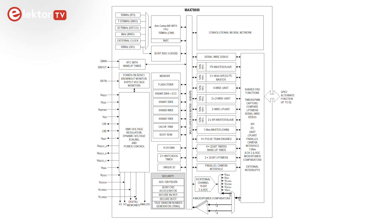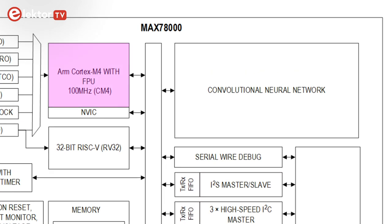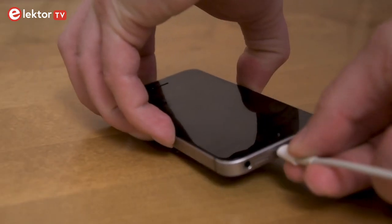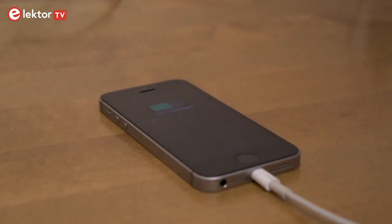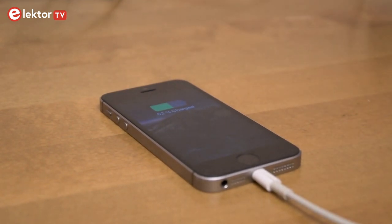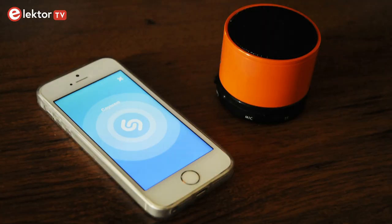An AI application running at the edge does all the hard work by itself. To do so it requires a good amount of processing power, and this is why the MAX78000 combines an ARM Cortex-M4 processor with a floating-point unit, a convolutional neural network accelerator, and a RISC-V core into a single device. The MAX78000 is also optimized for ultra-low power operation, making AI inferences very energy efficient.